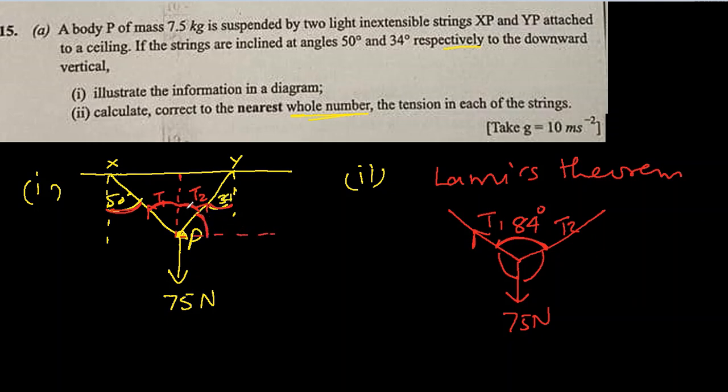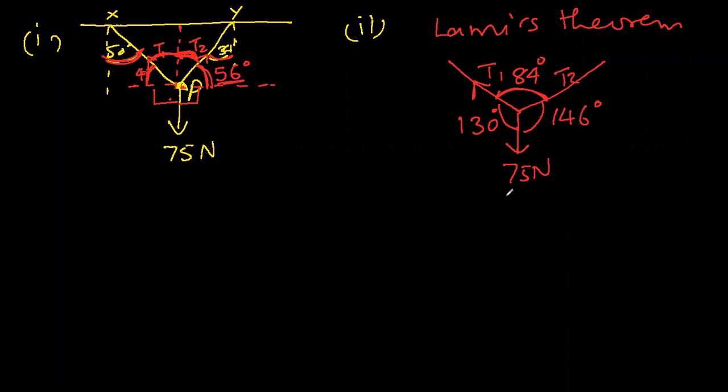This horizontal line will make an angle here of 34, so this will be 90 minus 34, which is 56 degrees. Total, this angle will be 146 degrees. Similarly, a horizontal line here is 50, so remaining will be 40, and this is 90 plus 40 equals 130. Now applying Lami's theorem: 75 newtons divided by sine of 84 degrees equals t1 divided by sine of 146. So t1 is the only unknown here.